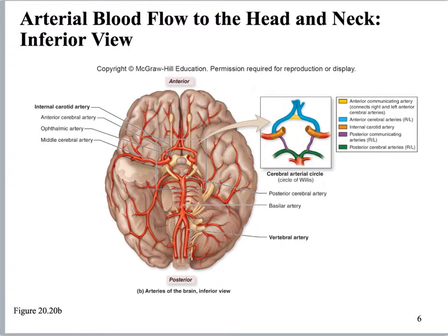We're not going to spend a whole lot of time on the brain's perfusion. What I want you to memorize is the circle of Willis. Your internal carotid is going to feed it on either side. You also have the vertebral arteries coming in and feeding it. This circle is important because if it gets blocked, you can still get perfusion to that side of the brain along those pathways — it can go in a circle, which adds a nice level of redundancy. You do not need to memorize all the branches.